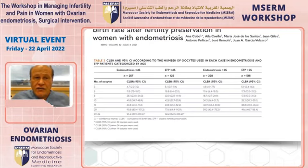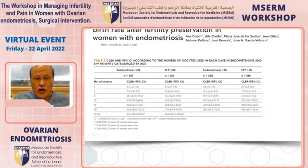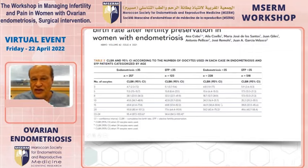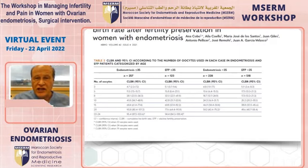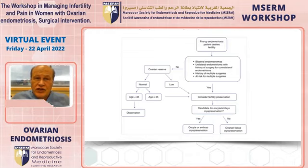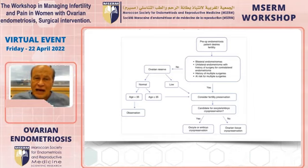To achieve a 69 percent pregnancy rate from frozen oocytes, 15 oocytes are needed. In women over 35 — whether for elective or endometriosis indications — the required number increases further. Therefore, a large number of eggs is needed when offering IVF for fertility preservation to patients with endometriosis, and this must be clearly communicated to the patient.